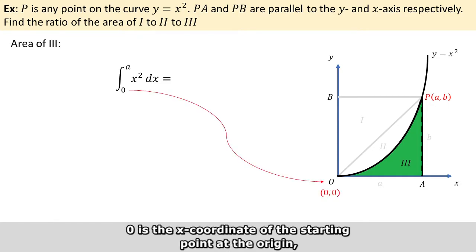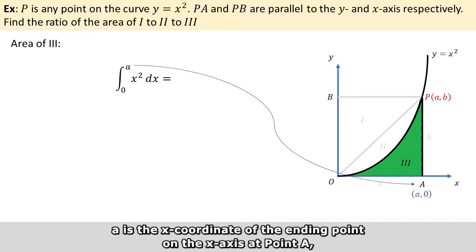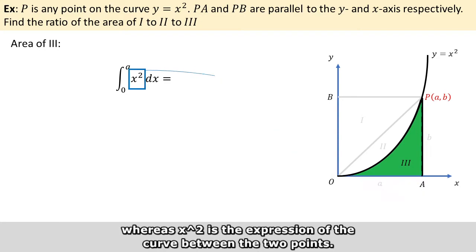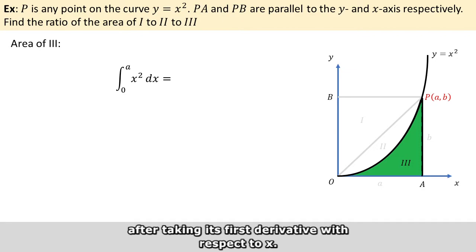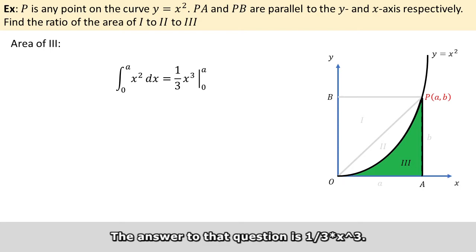0 is the x-coordinate of the starting point at the origin, and a is the x-coordinate of the ending point at point A, whereas x² is the expression of the curve between the two points. Essentially, this expression asks us to determine what gives x² after taking its first derivative with respect to x. The answer is (1/3)x³.